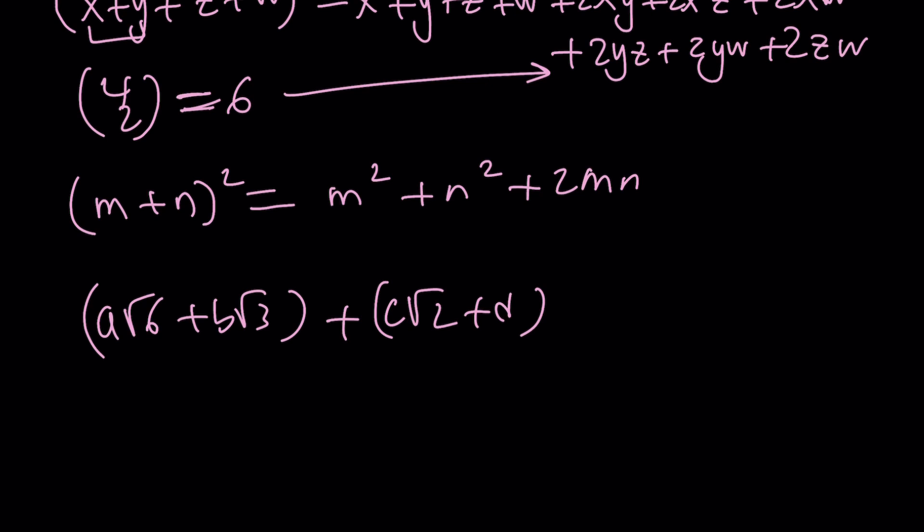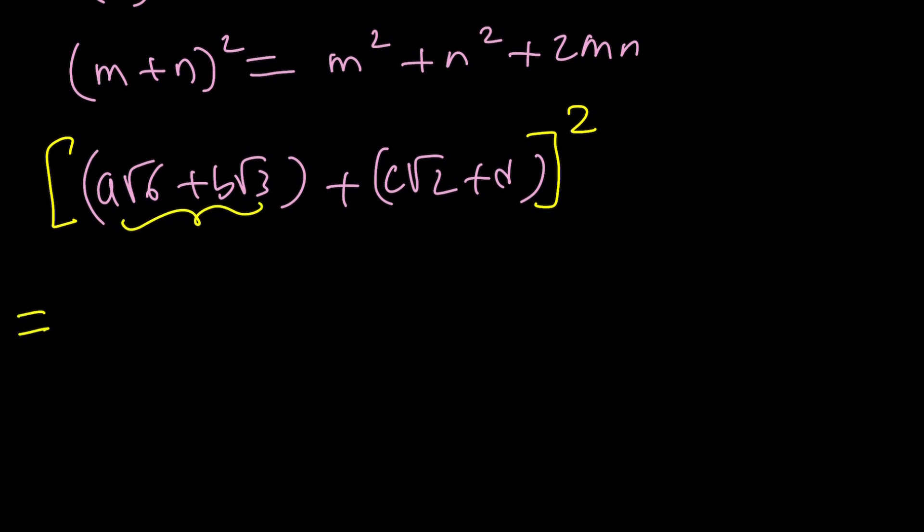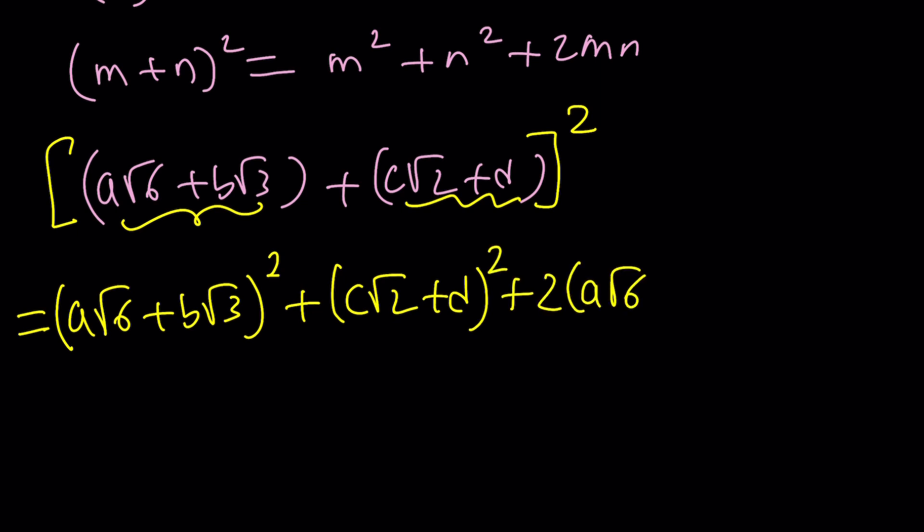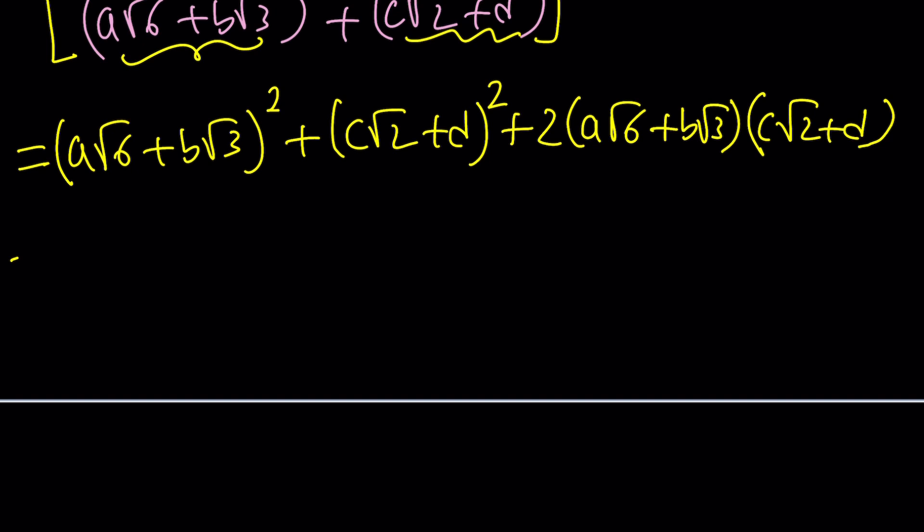Now we're going to square this sum of sums. We're going to treat it as m and this as n. First, we need to square this, and then we need to square this, and then we need to write 2mn, which is 2 times this times this. This is a lot of work, isn't it?